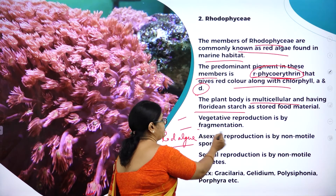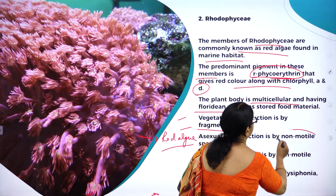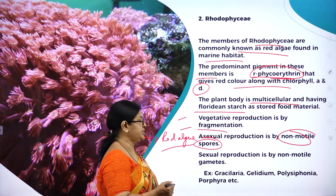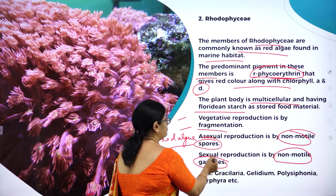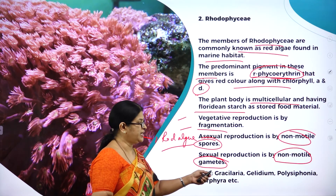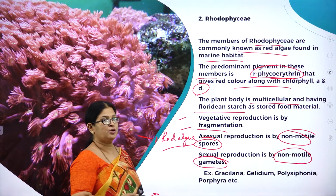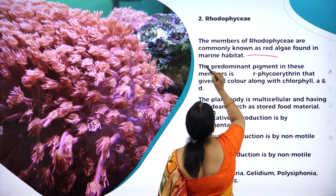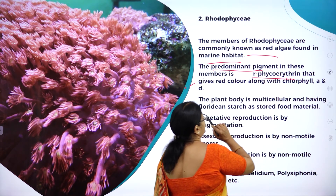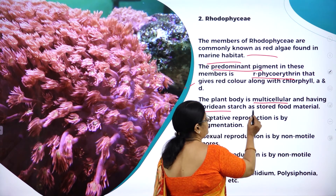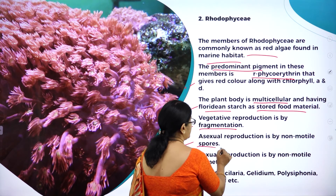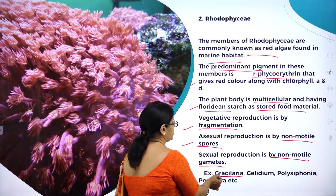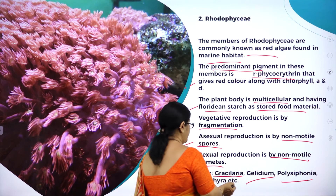Vegetative reproduction is by fragmentation. Asexual reproduction is by non-motile spores — unlike Phaeophyceae which had biflagellate spores. Sexual reproduction is also by non-motile gametes. Examples of Rhodophyceae include Gracilaria, Gelidium, Polysiphonia, and Porphyra.